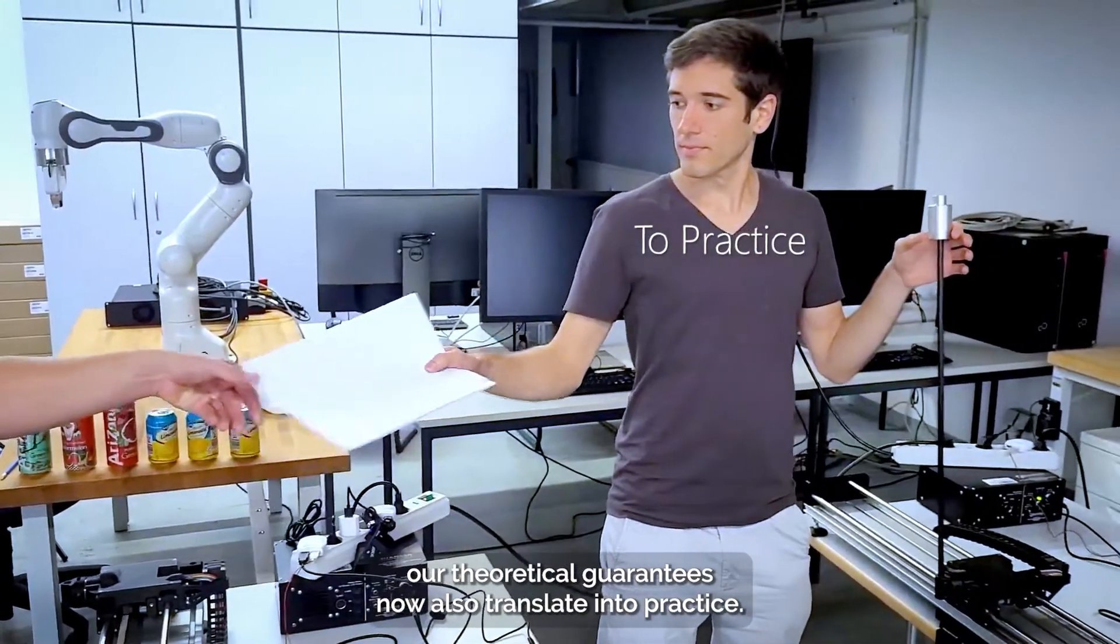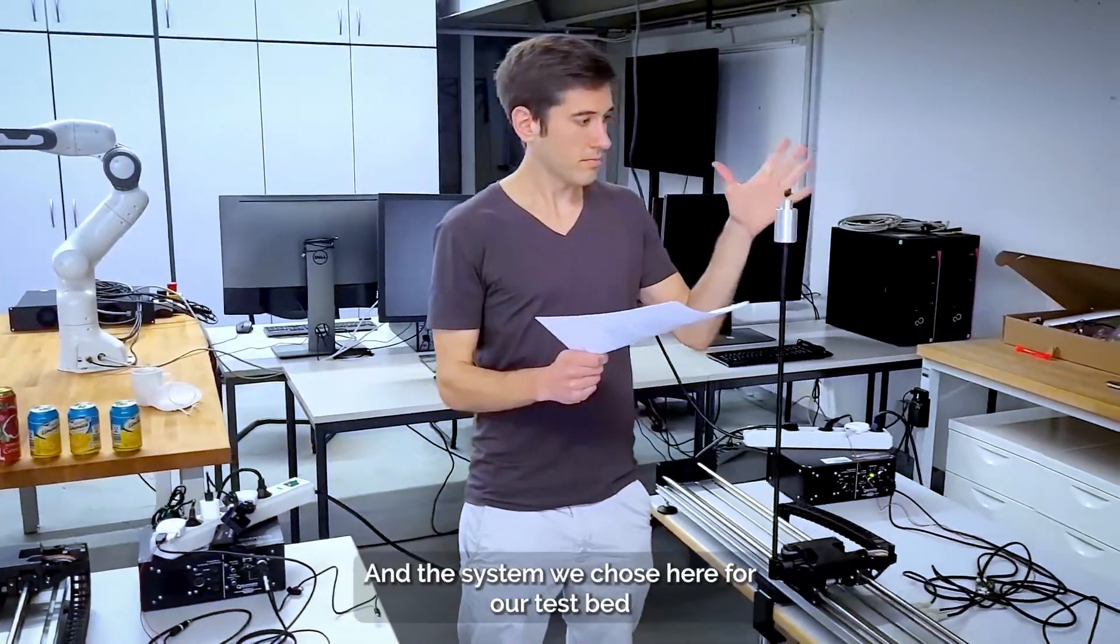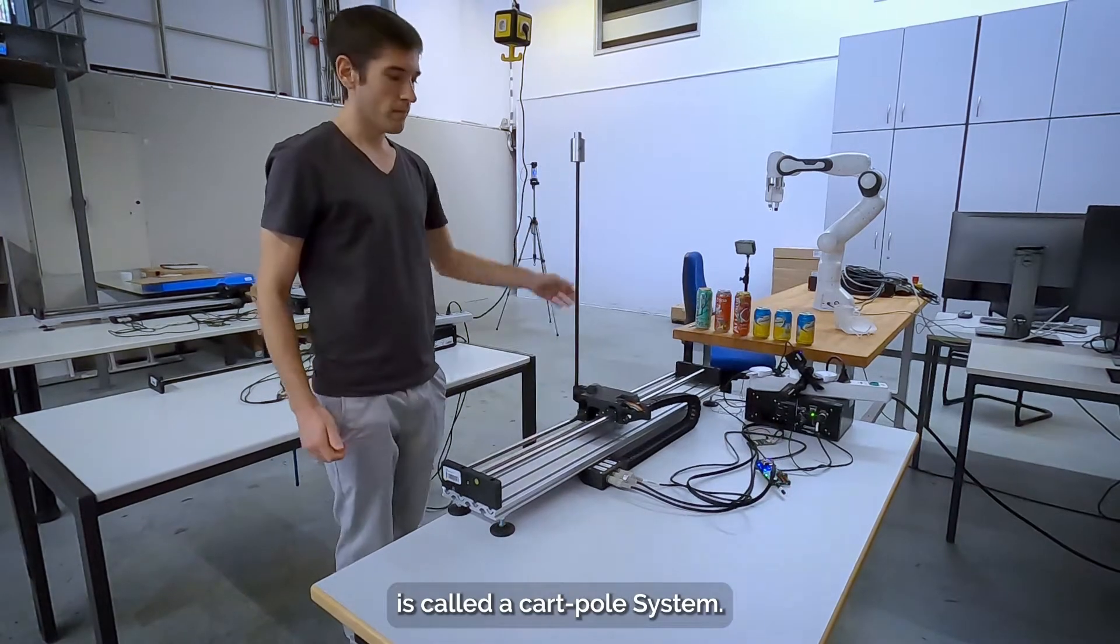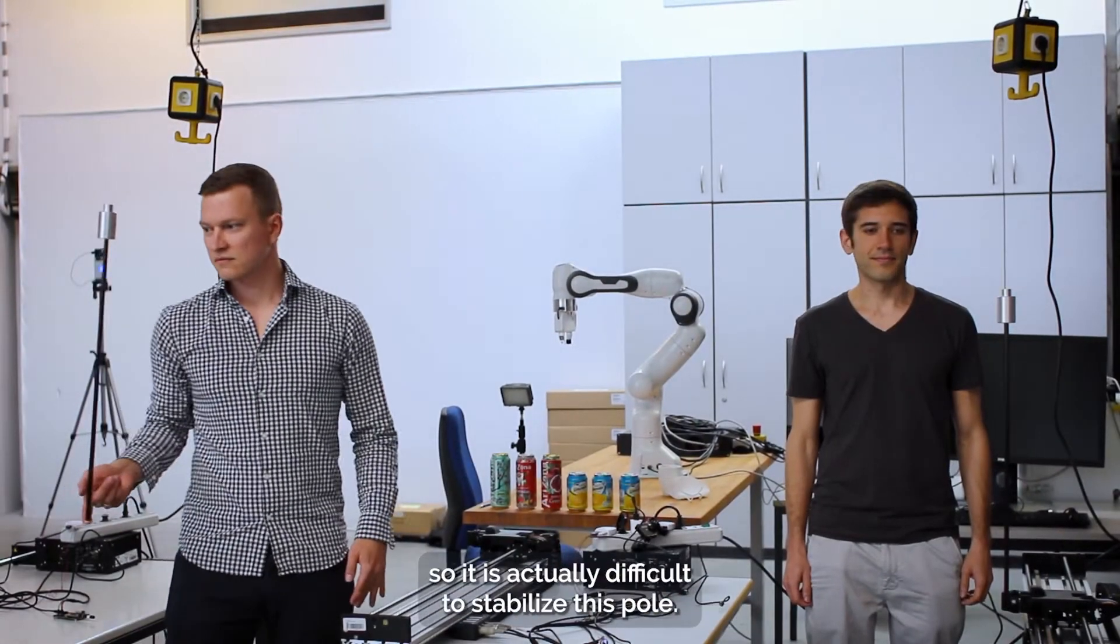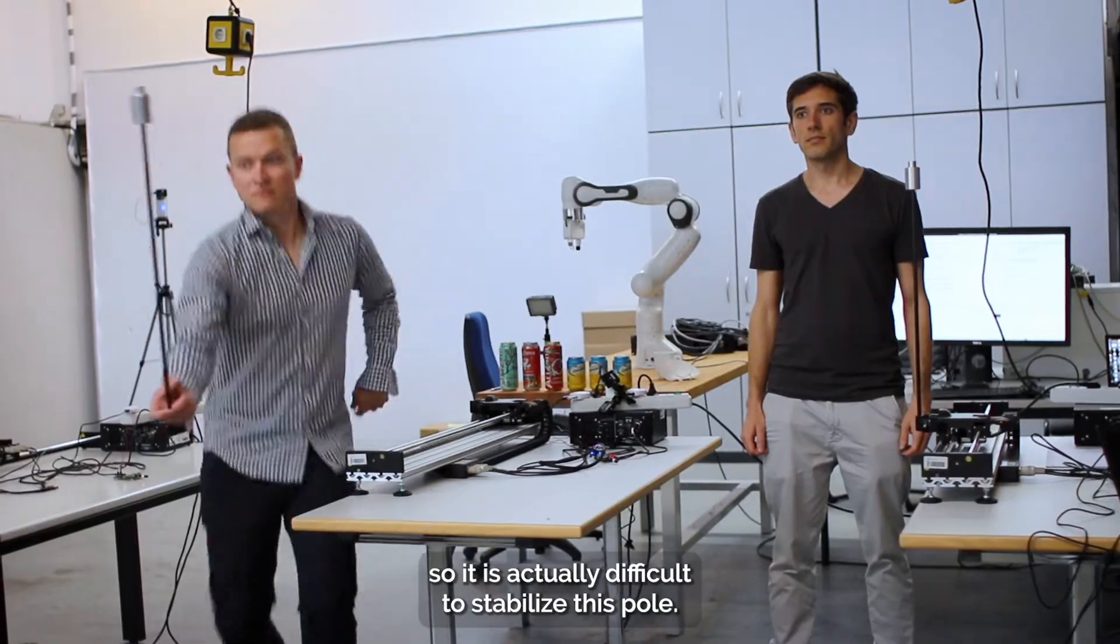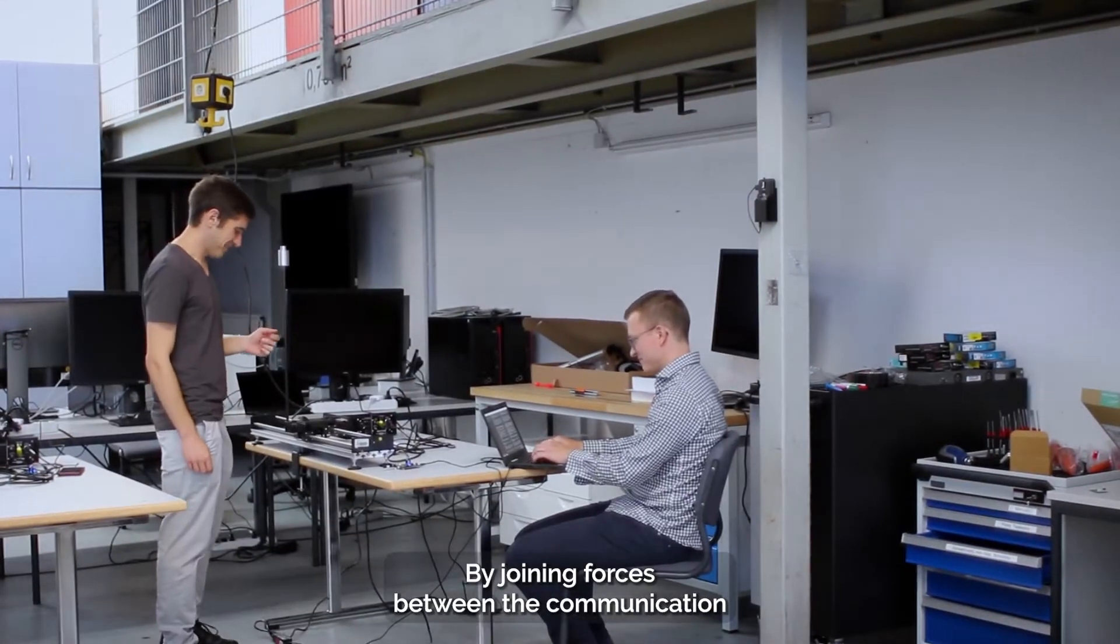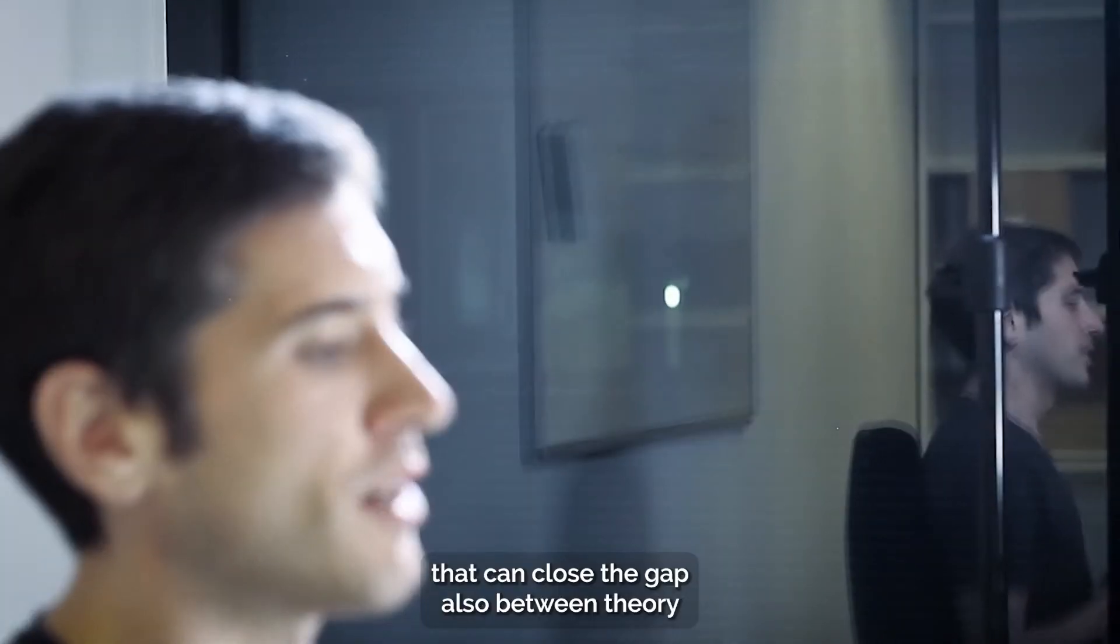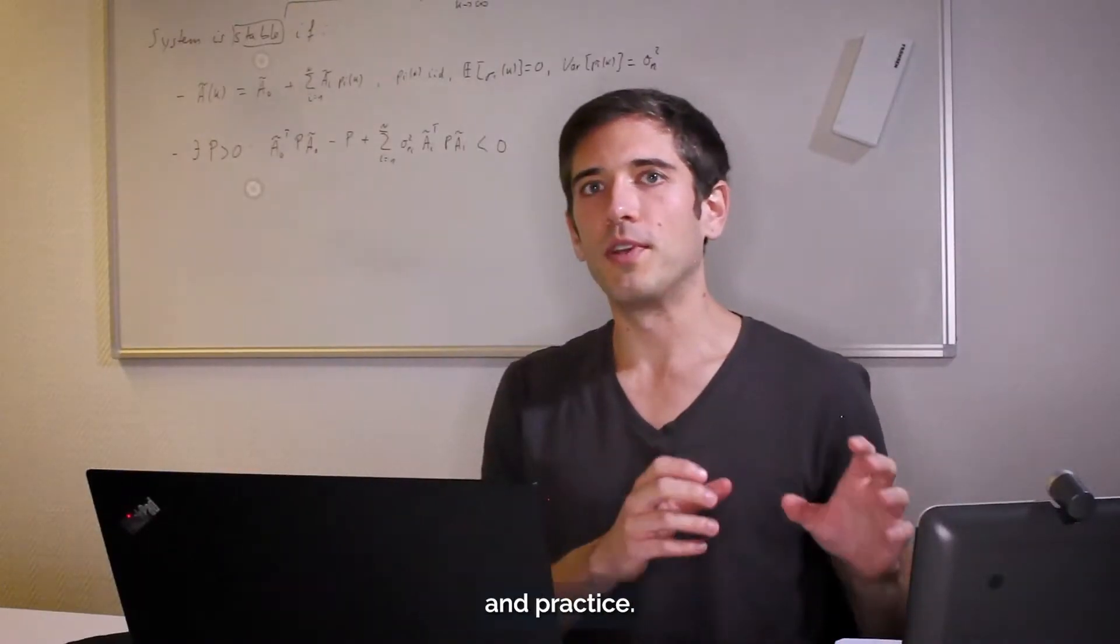And the system we chose here for our test bed is called the cart pole system. And we chose it because it has fast dynamics, so it is actually difficult to stabilize this pole. By joining forces between the communication and control side, we are able to develop a co-design that can close the gap also between theory and practice.